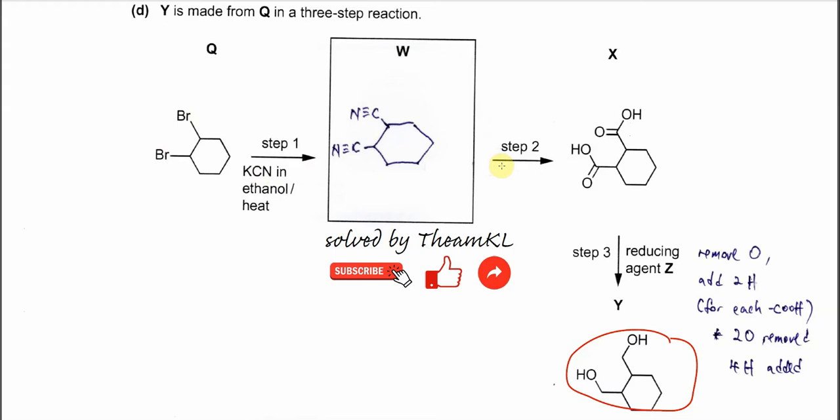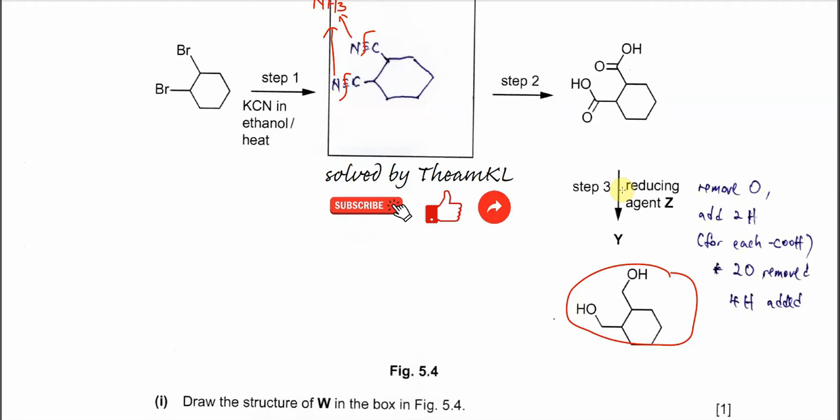And for the step two, it's very clear that this nitrile undergo hydrolysis. So means this CN bond will break and the carbon will form COOH, the carboxylic acid. And this nitrogen, these two nitrogen will form ammonia later. Right. So we'll discuss these reactions later. So means after the step two, it will form this dicarboxylic acid.